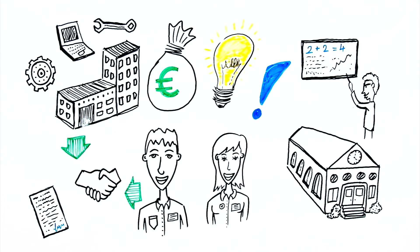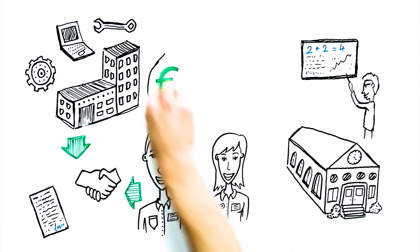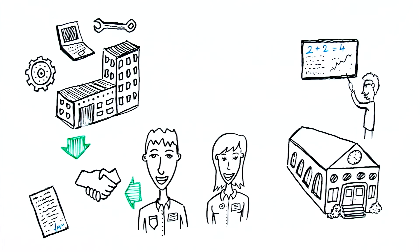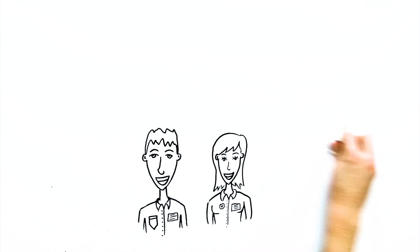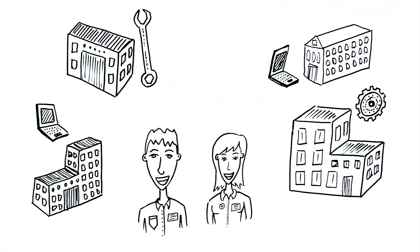An apprenticeship lasts between two and three and a half years. At the end of the apprenticeship you take an exam. You have completed your training when you pass this exam. This enables you to apply to any business looking for your specialist skills.